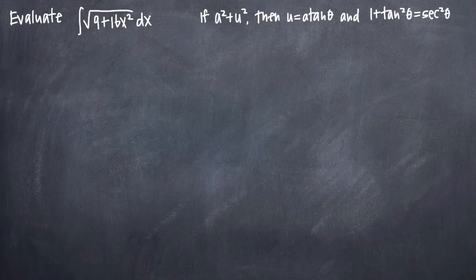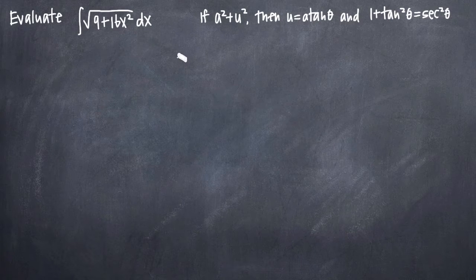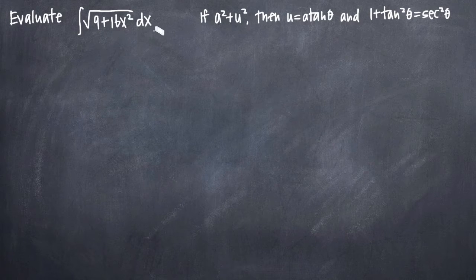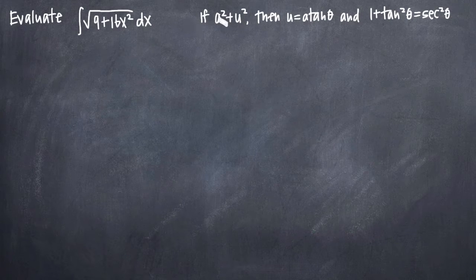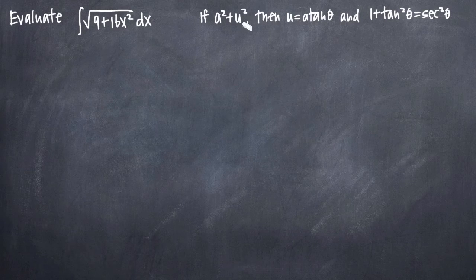In this particular problem, we've been asked to use trigonometric substitution to evaluate the integral of the square root of 9 plus 16x squared. As with any trigonometric substitution, the first thing you want to do is identify what kind of format you have in your function. In our case, we have the format a squared plus u squared, where a is a constant and u involves our variable x. So a is 3 because 3 squared is 9, and u is 4x because (4x) squared is 16x squared.